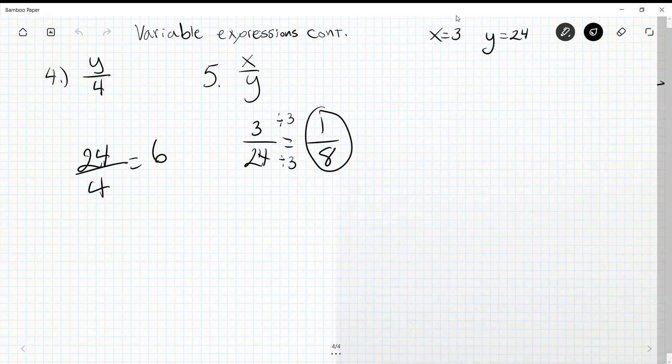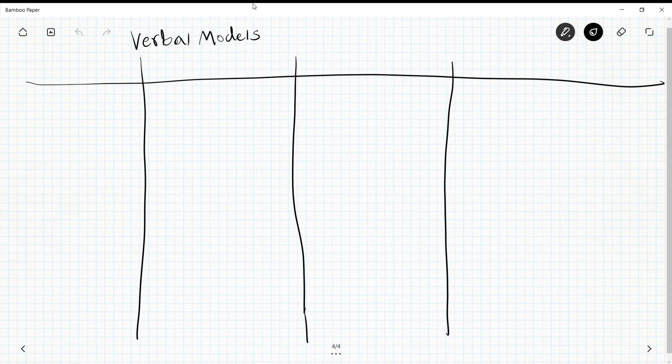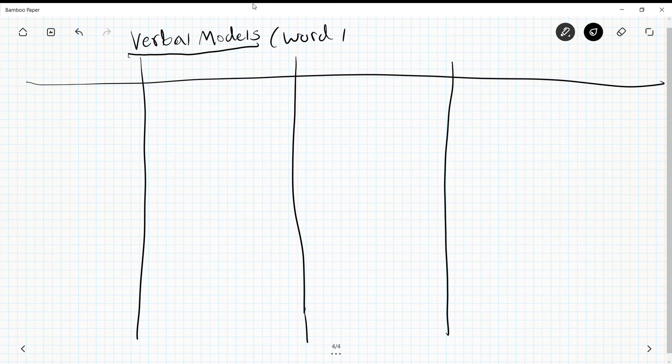The last thing I want to look at, and probably the most important—last year we saw a whole lot of word problems. This year they're called verbal models and word problems. And the biggest item that we need to face here is that we need to figure out some words that stand for operations.